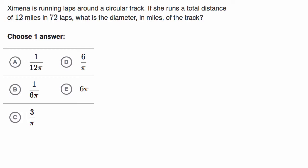So we have a question here that's dealing with circles. It says Ximena is running laps around a circular track. If she runs a total distance of 12 miles in 72 laps, what is the diameter in miles of the track? Pause this video and try to work through it on your own before we work through it together.